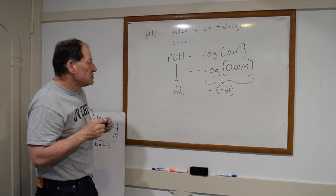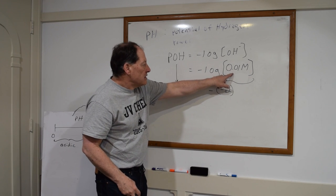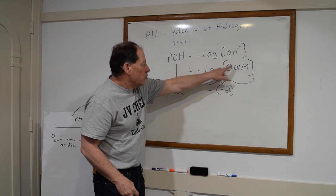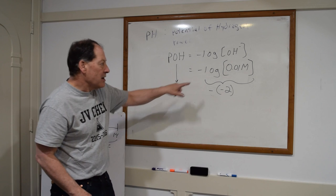And then the negative of the negative would be a positive. So the pOH would equal 2. So I do exactly the same calculation, except I'm interested in the hydroxide ions. So the pOH of a 0.01 molar solution is 2. So that's how I would do the calculation.